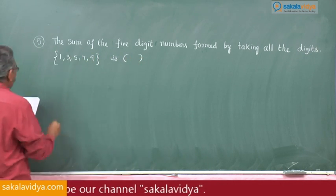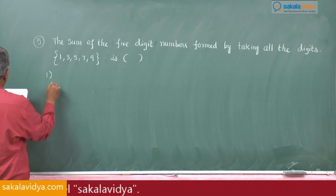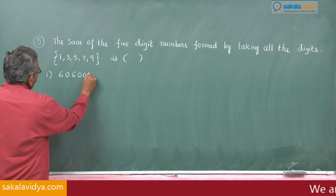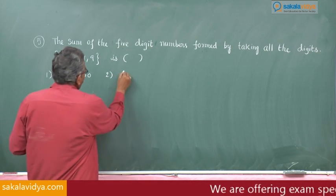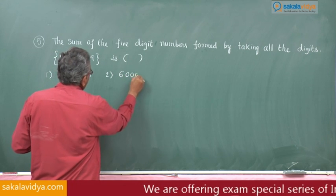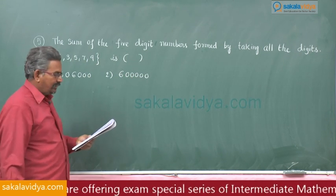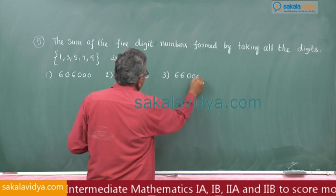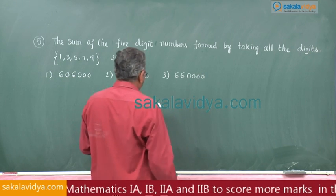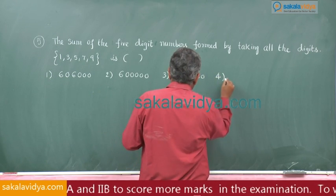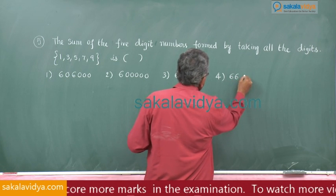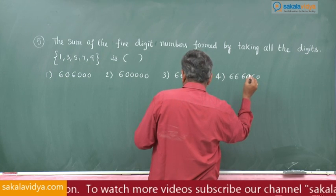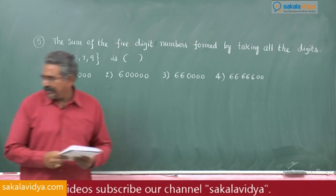first option 606000, second one 600000, third one 66000, fourth one 6666600. Let us see.